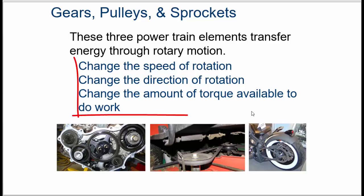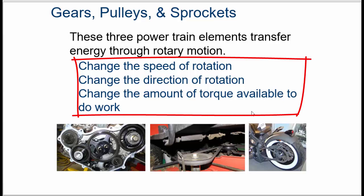So basically gears, pulleys, and sprockets can be used to change the speed of rotation, the direction of rotation, or the amount of torque available to do work.